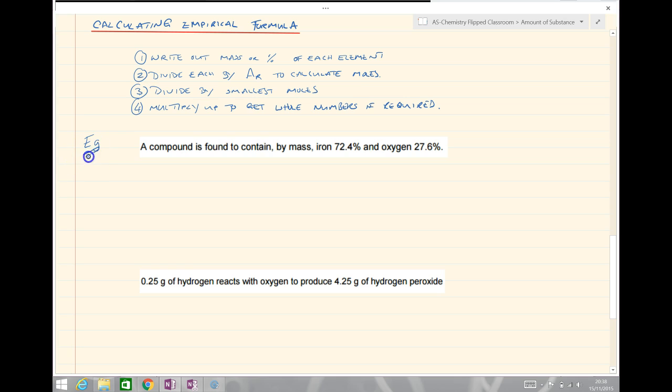The first thing to do is write out the mass or percentage of each element. So we'll go through these steps with examples. The percentage here of iron and of oxygen. We could assume there was 100 grams and therefore we'd have 72.4% iron, that's 72.4 grams, and of oxygen if we had a hundred grams we'd have 27.6 grams. So that's step one.